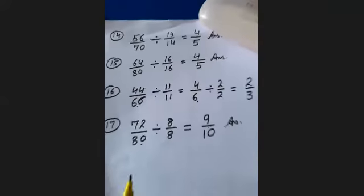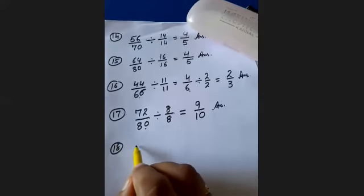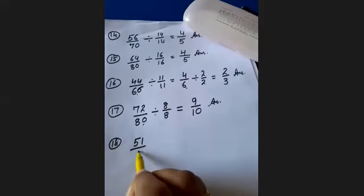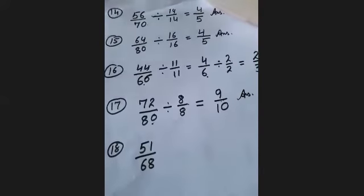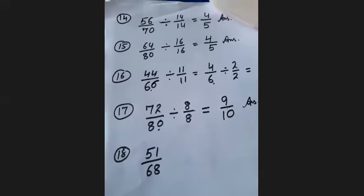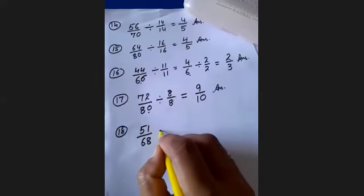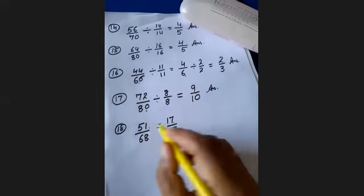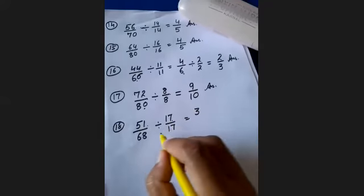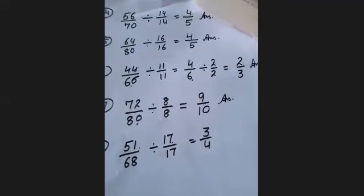The last question, question 18 of Exercise 23: 51 upon 68. Both numerator and denominator are multiples of 17. Divide by 17: 17 times 3 is 51, and 17 times 4 is 68. So your answer is 3 upon 4.